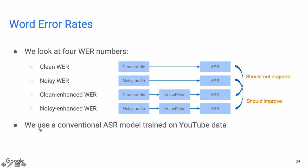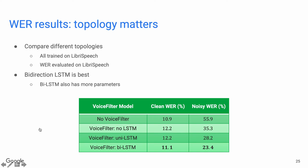In our first experiment, we use LibriSpeech as our training and evaluation dataset and try different network topologies. Our experiment shows that bidirectional LSTM has the best performance compared with unidirectional LSTM or non-recurrent networks. On clean speech, the word error rate is 11.1, which is very close to when there is no VoiceFilter. On noisy speech, it reduces word error rate from 55.9 to 23.4, which is a huge improvement.